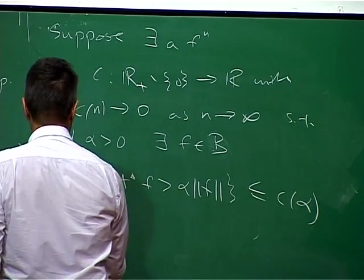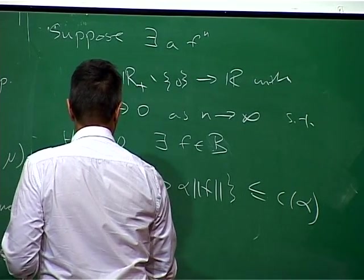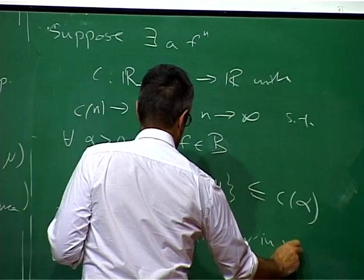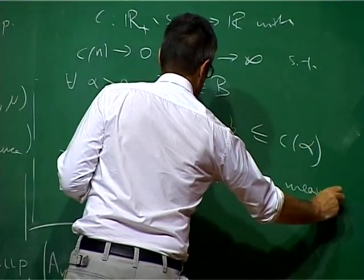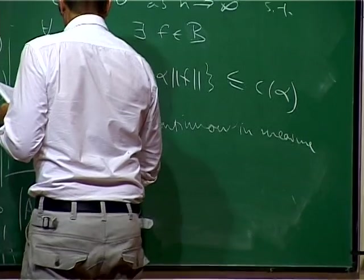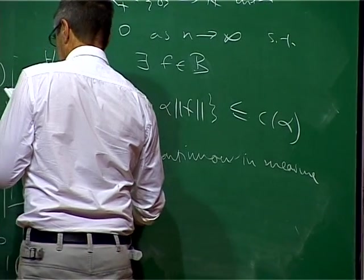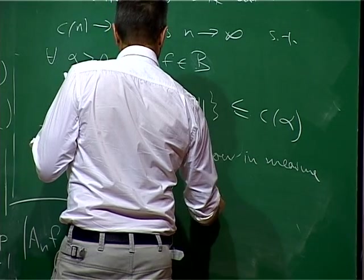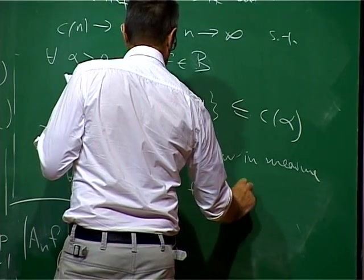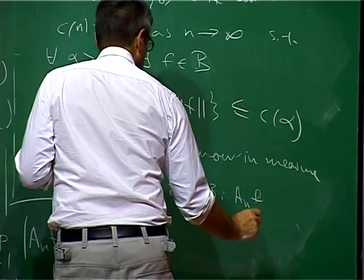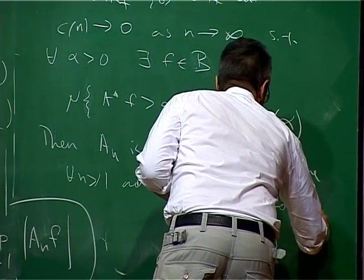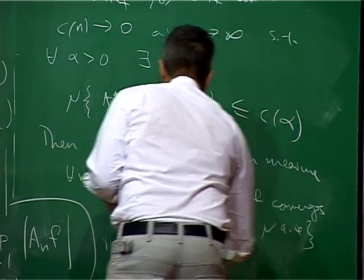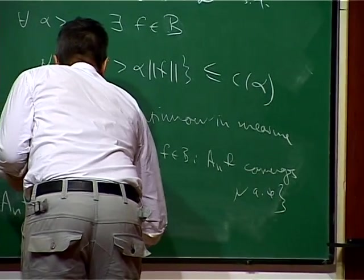Then the conclusion is AN is continuous in measure for every N greater than or equal to 1, and the set of all F in B such that AN F converges mu almost everywhere is closed in B.